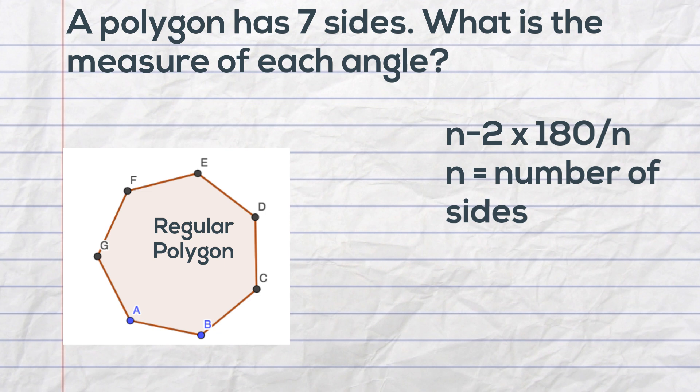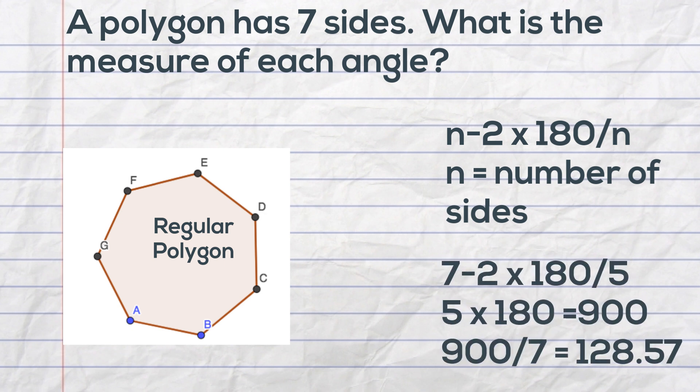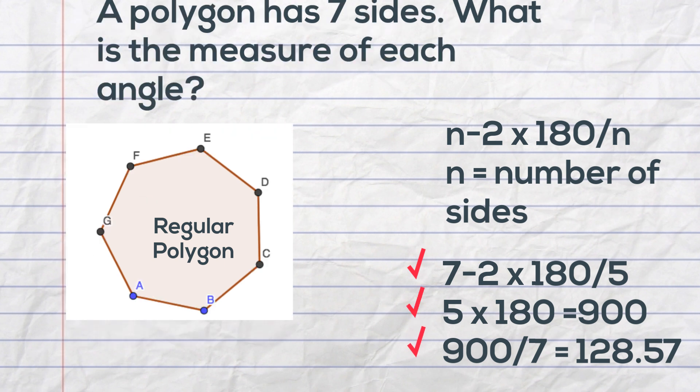Okay, how about this one? A polygon has 7 sides. What is the measure of each angle? So we will take 7 minus 2 because there are 7 sides, and that is 5. 5 times 180 is equal to 900. 900 divided by 7 is 128.57. So the interior angle measure of each angle with 7 sides is 128.57.